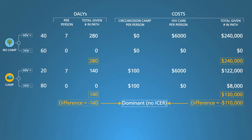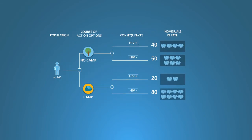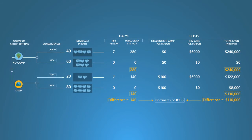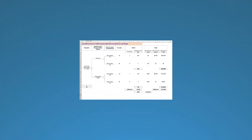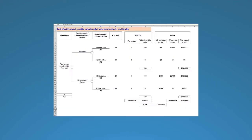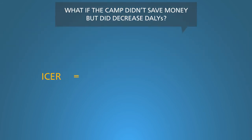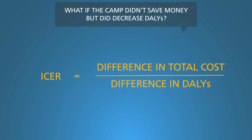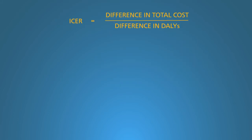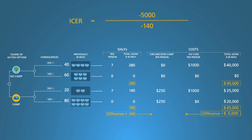Let's step back to consider what we did with the decision tree. We compared two action options, portrayed the probability of key disease outcomes, and attached DALYs and money to those outcomes, arriving at expected DALYs and costs for each action option. Real decision trees aren't as visually elegant as in this video — here we see an Excel version. If the camp didn't save money but did improve health by decreasing DALYs, we'd calculate the ICER as the difference in total cost divided by the difference in DALYs. But when an intervention is dominant, we don't calculate the ICER. In a hypothetical modified example where camps cost $250 per client and lifetime medical costs were only $1,000, the ICER would be $36.